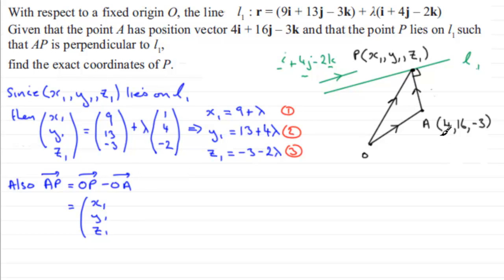And then we've got to minus OA. And if we minus OA, 4i, 16j minus 3k, then we're just going to have x1 minus 4 in the i-direction, y1 minus 16, and z1 minus minus 3. So that's z1 plus 3.